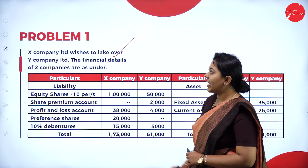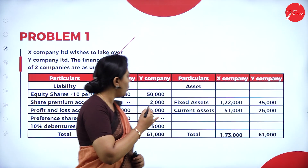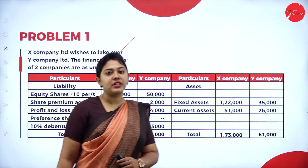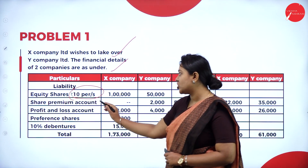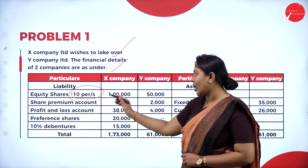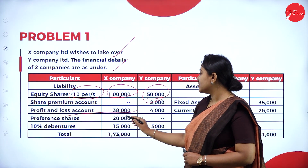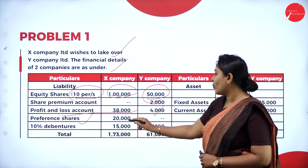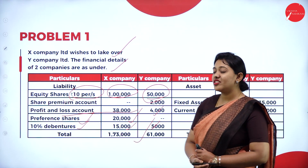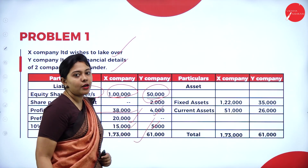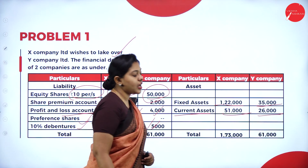X Company Limited wishes to take over Y Company Limited. The financial details of the two companies are given. Equity share of rupees 10 per share: X company is 1 lakh rupees, Y company is 50,000. Share premium account, profit and loss account: 38,000 and 4,000. Preference shares: X company 20,000, Y company nil. 10 percent debenture: 15,000 and 5,000. On the asset side, fixed assets: 1,22,000 and 35,000. Current assets: 51,000 and 26,000.